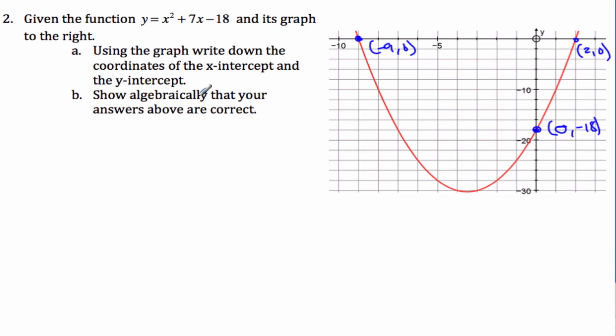To show algebraically, to find my x-intercepts, I always set y equal to 0. And so 0 is equal to x² + 7x - 18. In order to solve this, I could use quadratic formula, which will always work. But I'm going to try and factor it first and see if that works. If it does, then it's easier than quadratic formula.